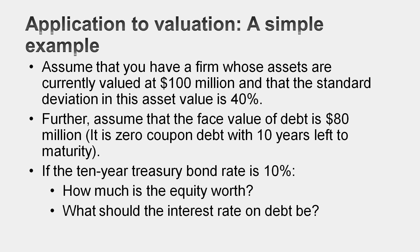Let's assume that this company has only one zero-coupon bond outstanding with a 10-year maturity and an $80 million face value. Let's also assume that the value you estimated of $100 million has a variance and standard deviation associated with it — that standard deviation is 40% and the riskless rate is 10%. You know the value of the business, the face value of the debt, it's a 10-year zero-coupon bond, the riskless rate is 10%, and the standard deviation of the value is 40%. With that information and an option pricing view of the world, you should be able to tell how much the equity is worth and what interest rate to charge on the debt.